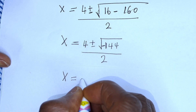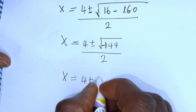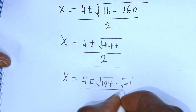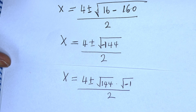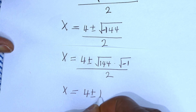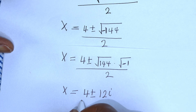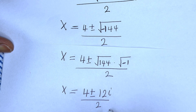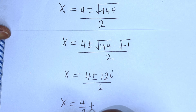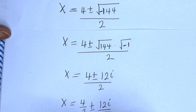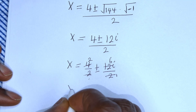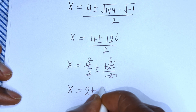This gives x equals 4 plus or minus the square root of 16 minus 160, over 2. That is 4 plus or minus the square root of negative 144, over 2. We rewrite the square root of negative 144 as the square root of 144 times the square root of minus 1, which gives 4 plus or minus 12i over 2. So x equals 2 plus or minus 6i.